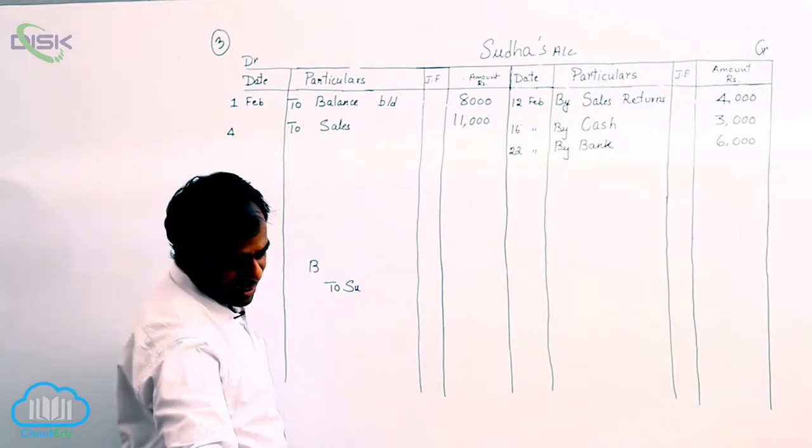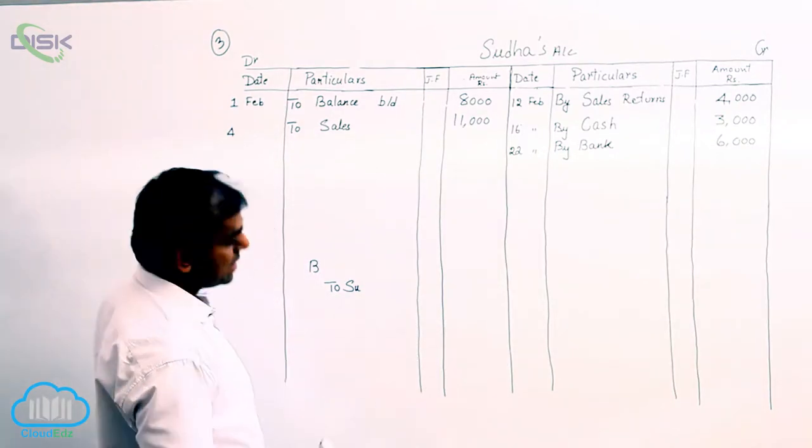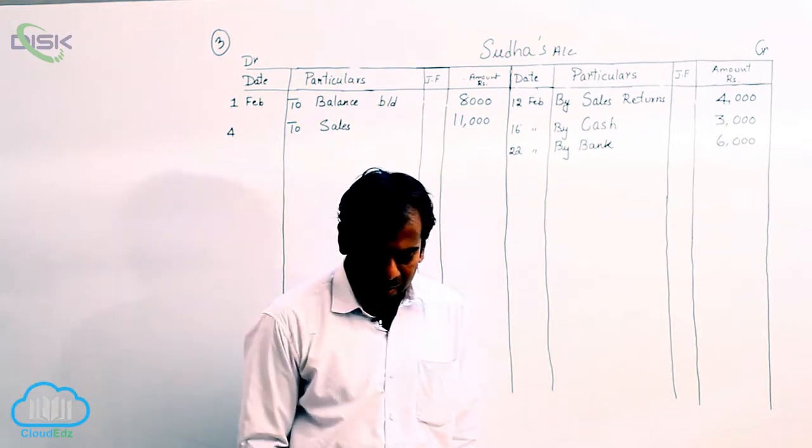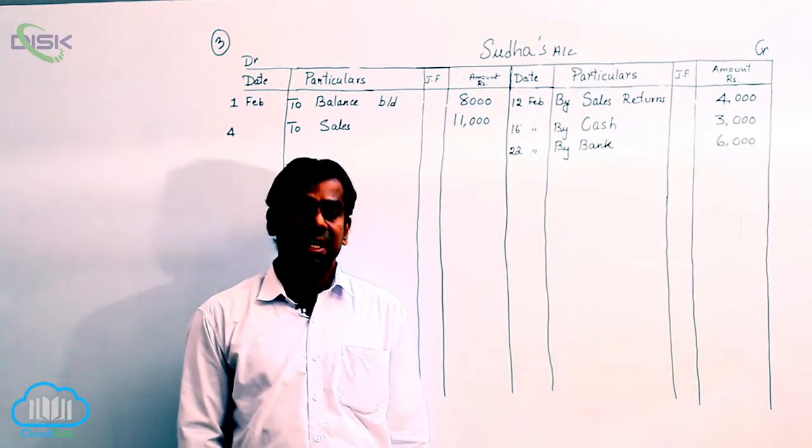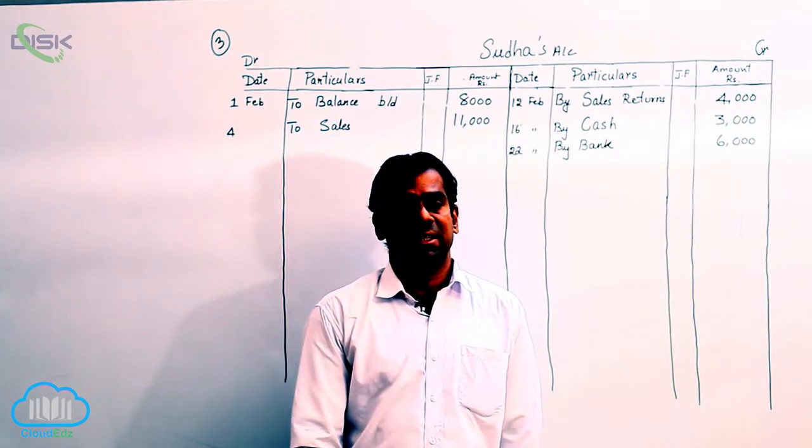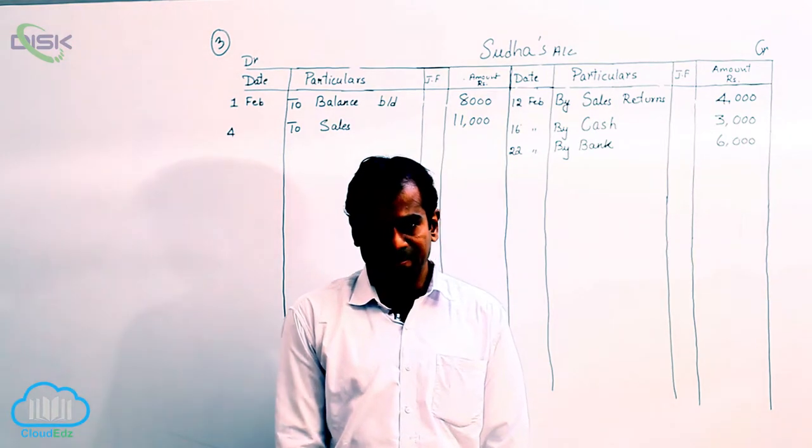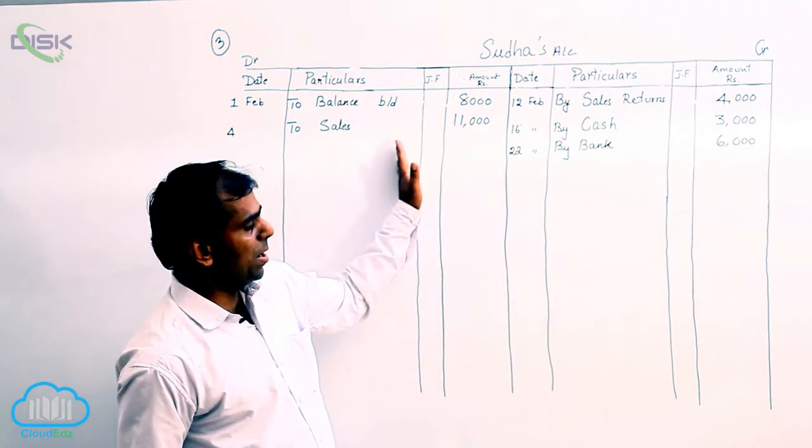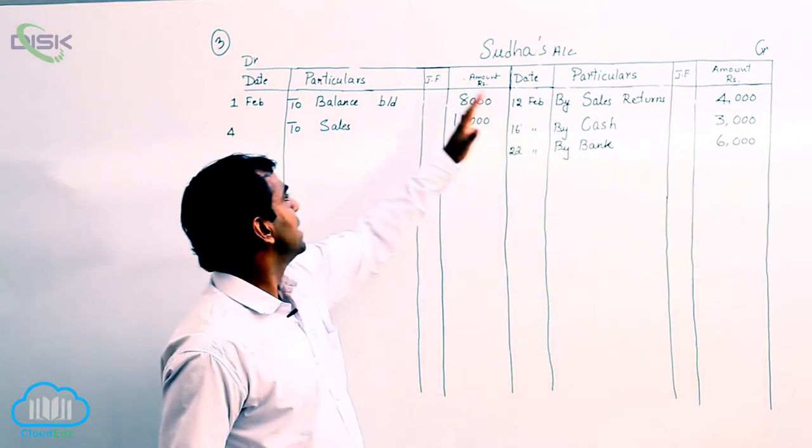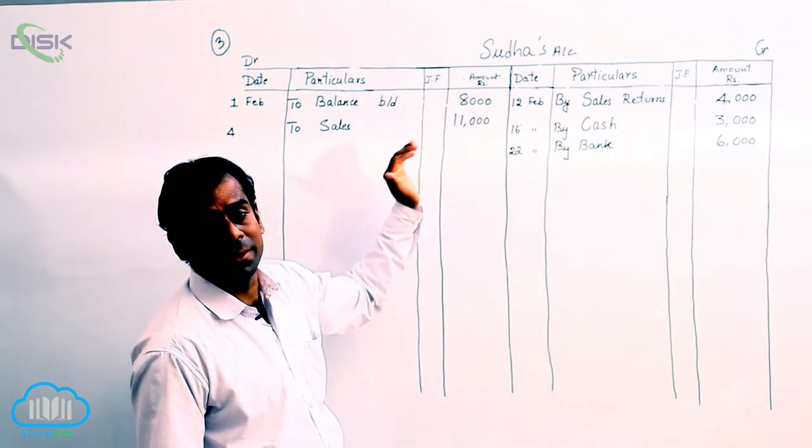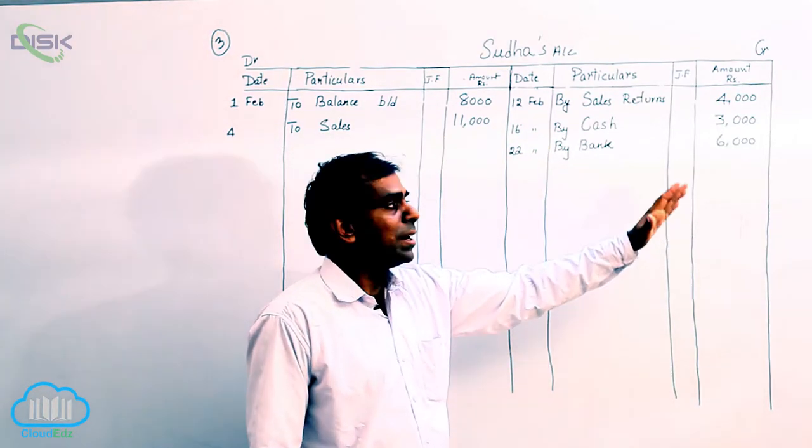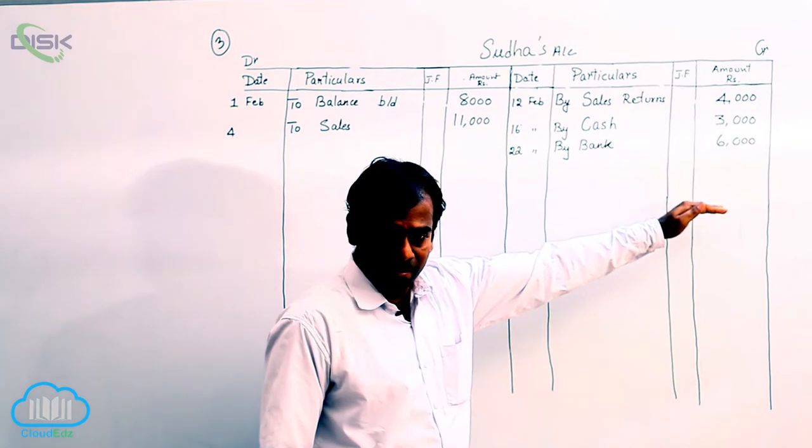Now let us see what is the next transaction. It states that Sudha account settled with 10% discount. Sudha settles the account with 10% discount meaning if you see there are some amounts on the debit side, some amounts are on the credit side. The debit side, the reasons being you sold goods to Sudha on credit. Therefore, she has to give you money.